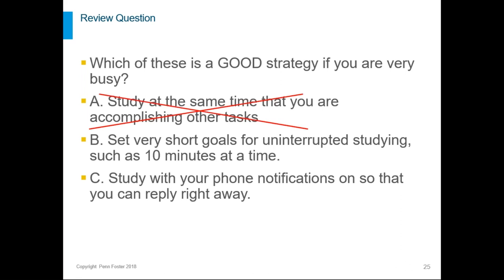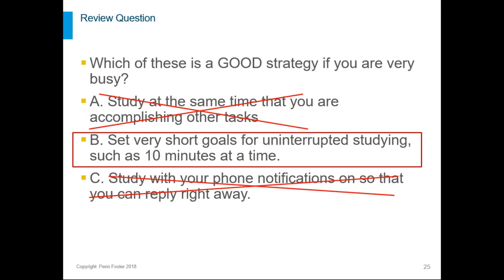And we talked about how A is not a good idea. Studying while multitasking really makes your studying not as effective. B is a good plan. Just set aside very short chunks of time where you can study and then go do other things. And C is obviously not good. You don't want your phone to be distracting you or any other distractions while your brain needs to focus on your studying.